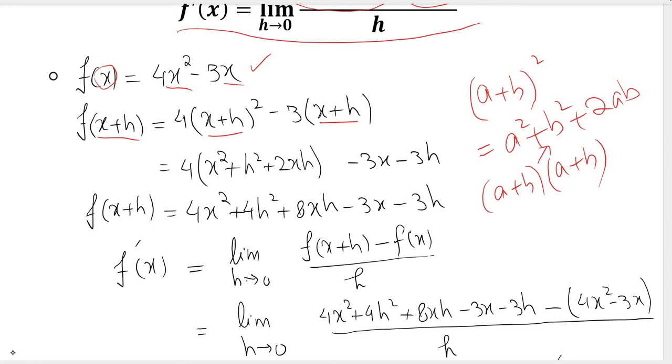So for x plus h, we take the square of the first one, square of the second one, and two times first and second. Then this minus 3 would multiply to both terms, so that becomes minus 3x and minus 3h.